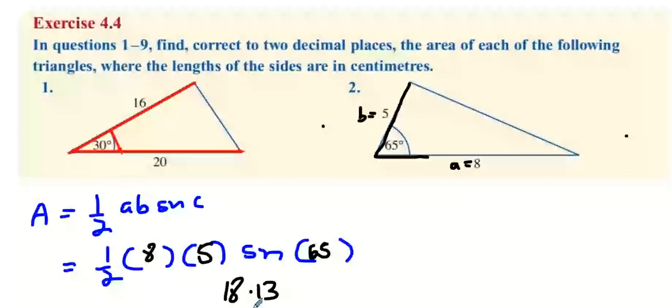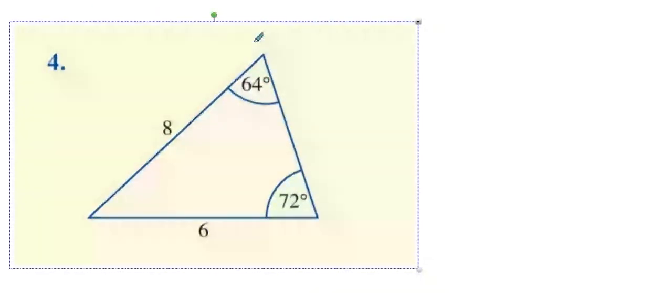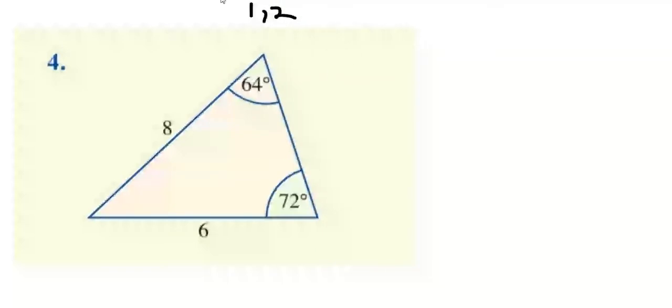Now we're moving on to question four. The problem with question four is that we know the lengths of these red ones here, and we'd usually use one half a b sine c.